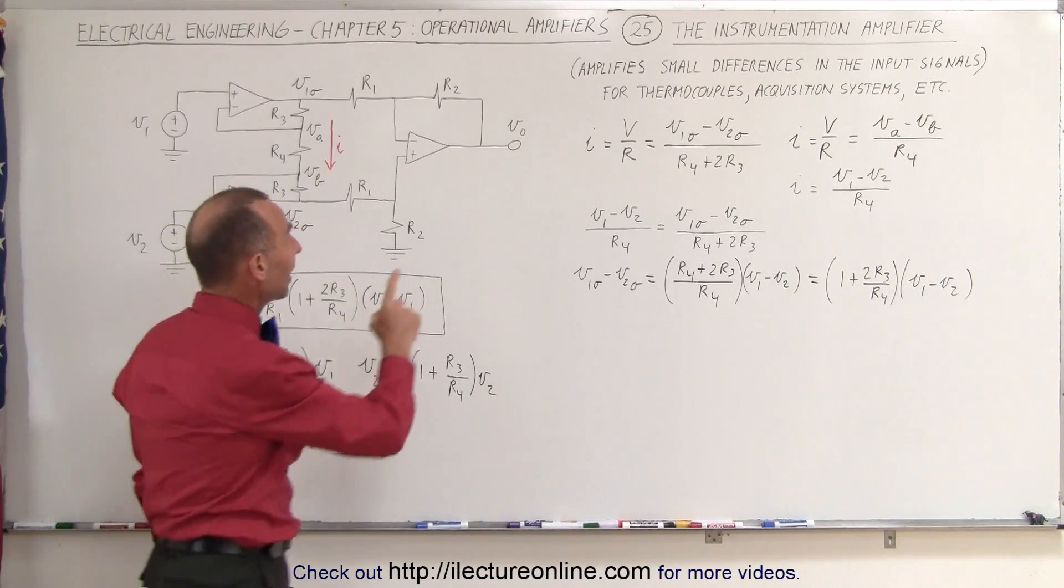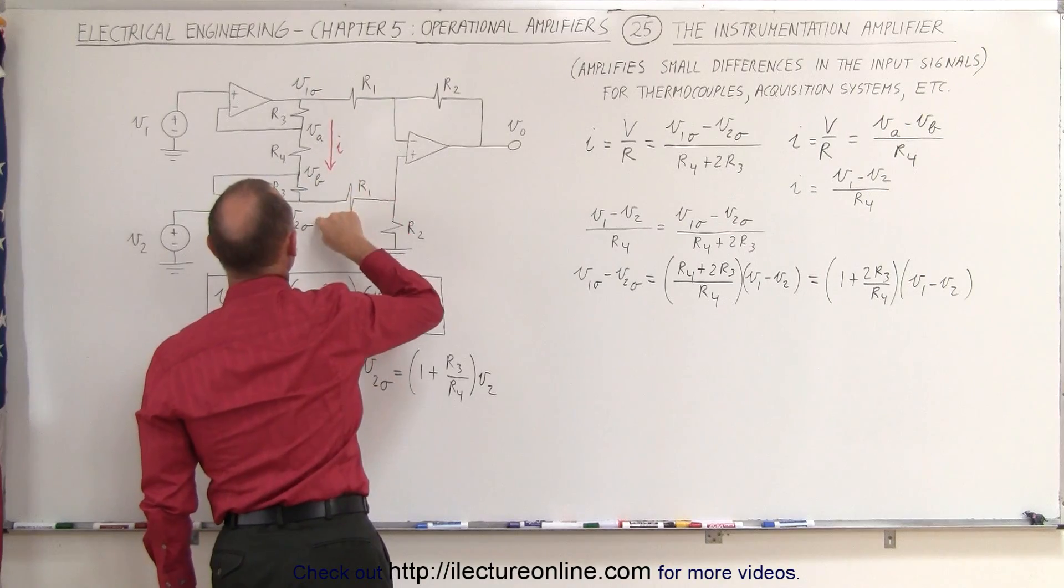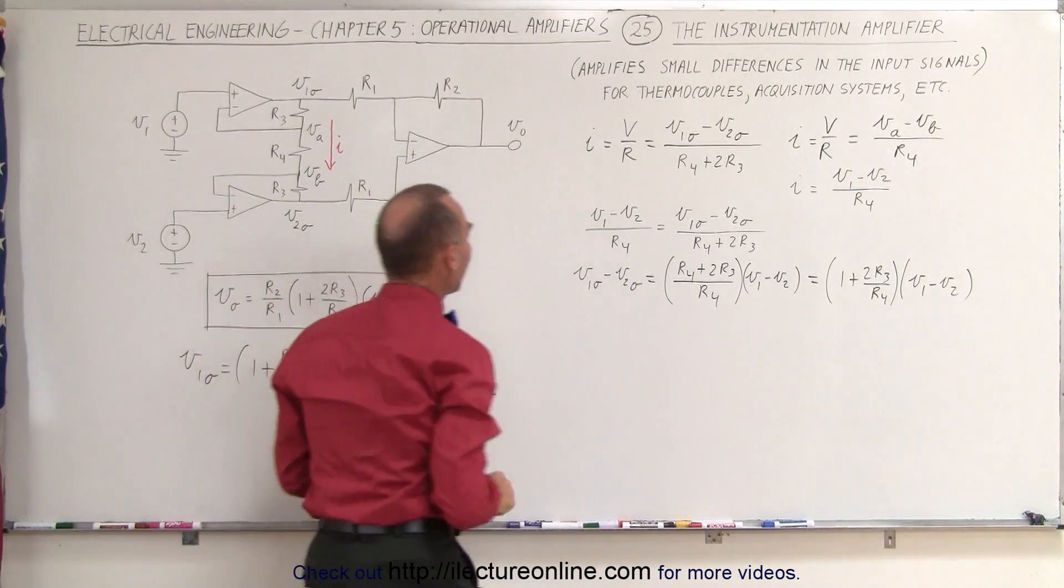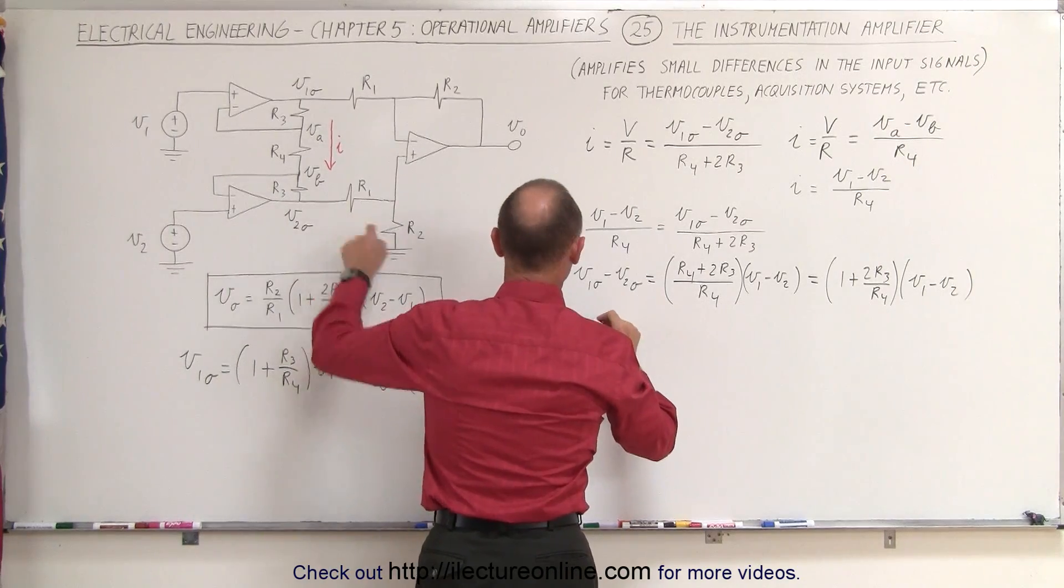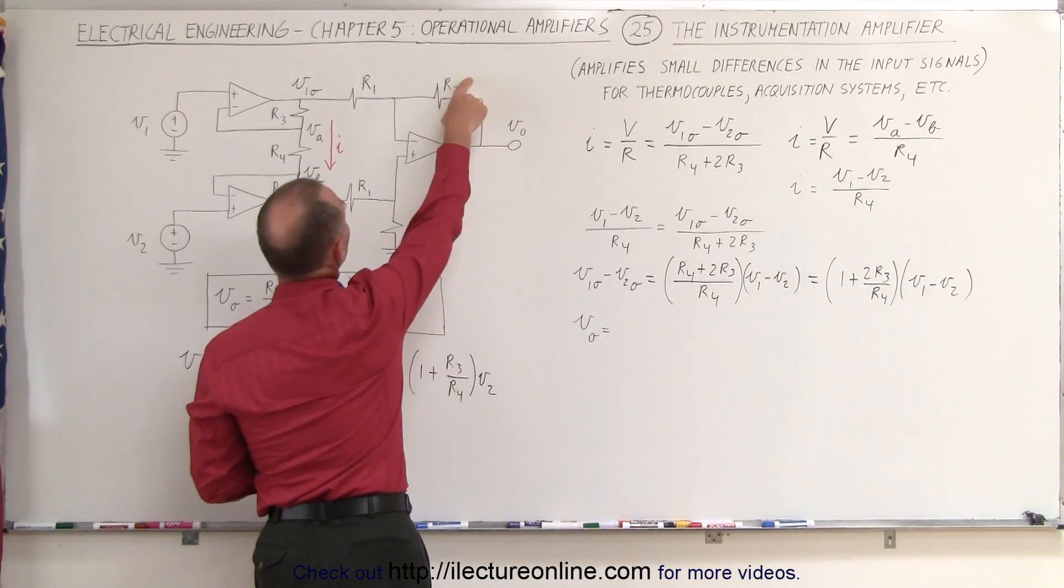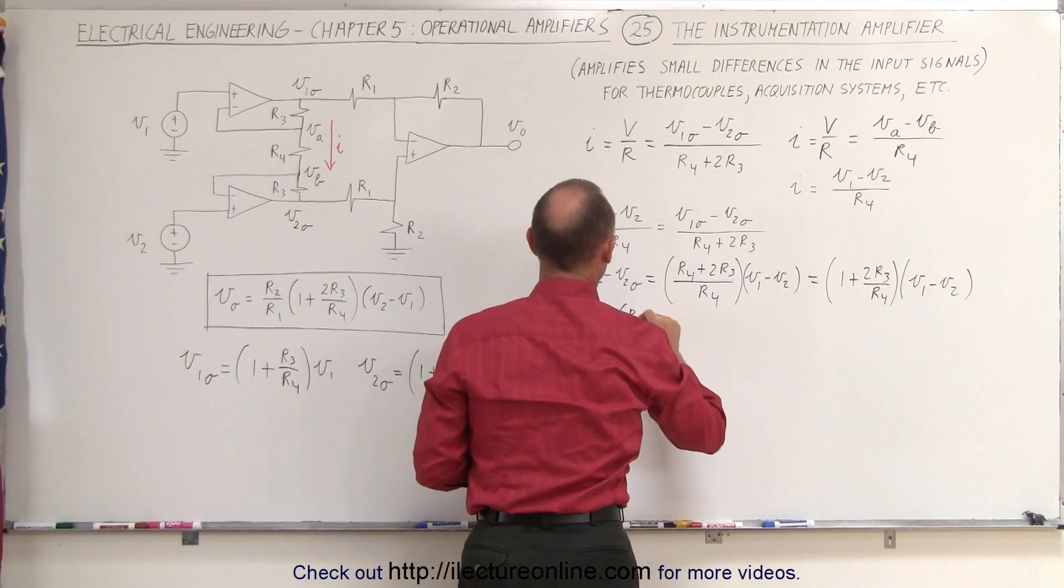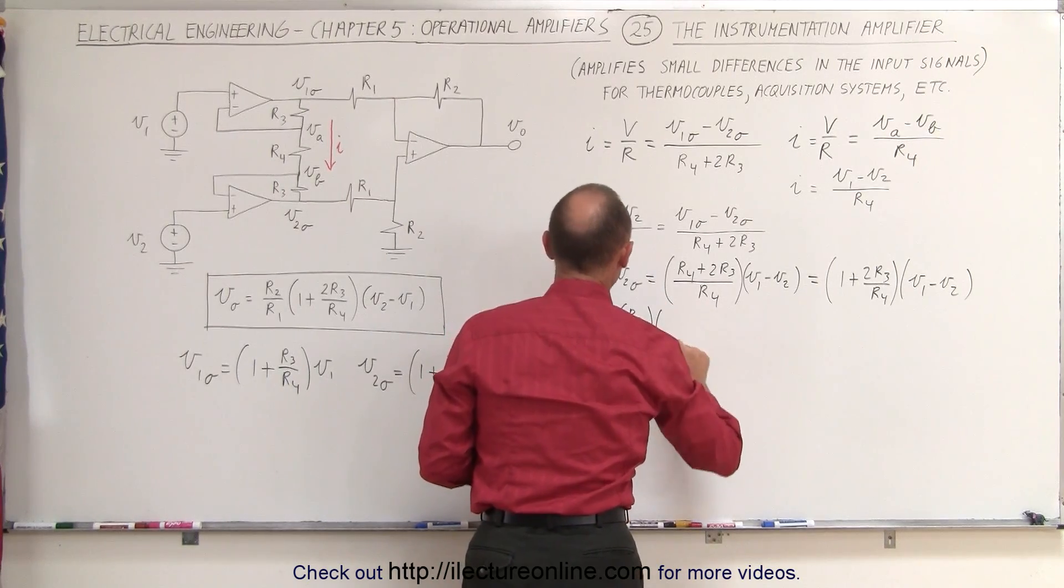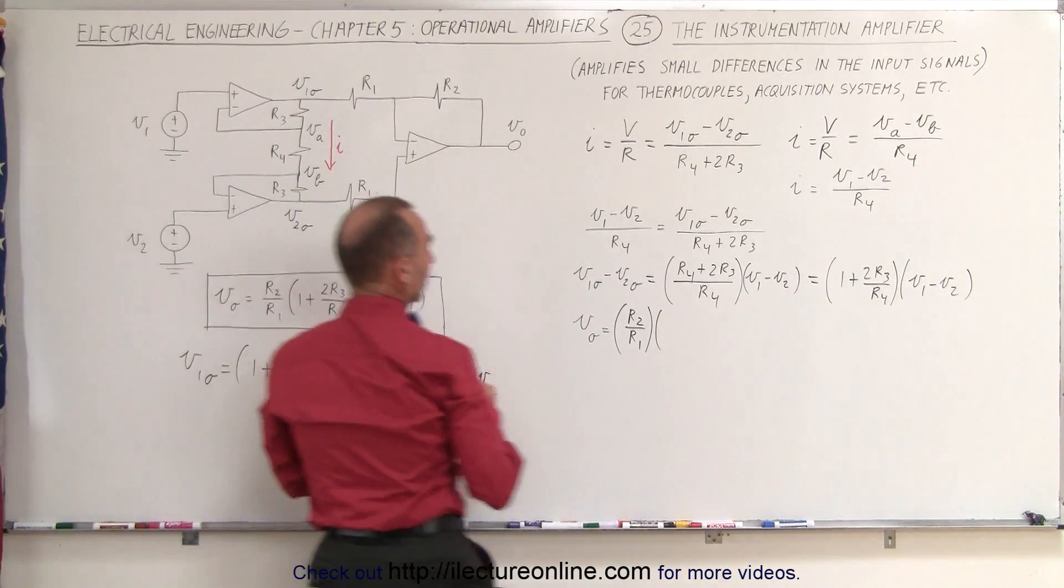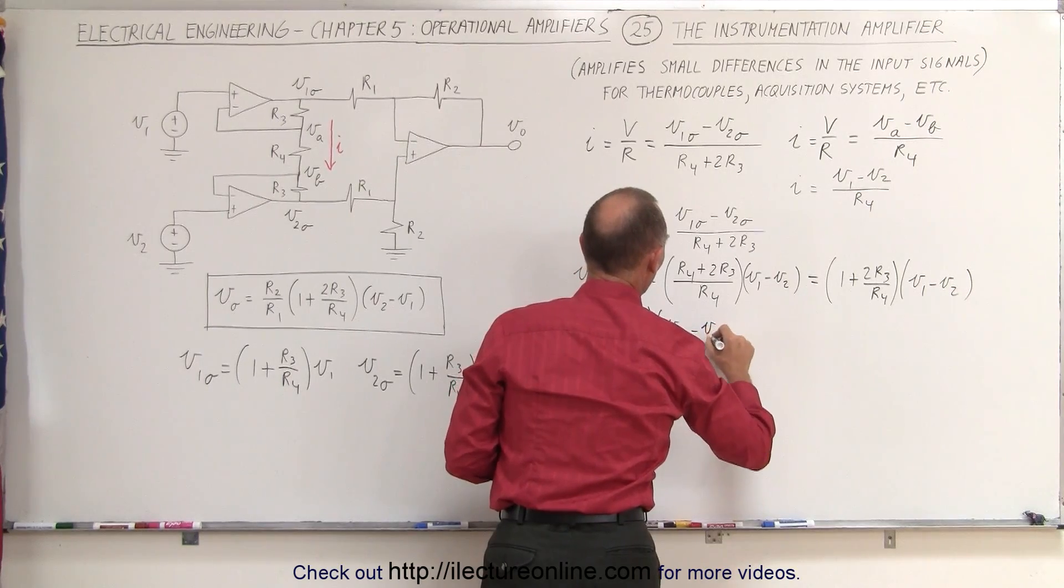Now the next step is to find V output relative to these two V inputs. V1 output and V2 output become the inputs to the third op-amp. So we can say that V output is equal to the ratio of the feedback resistor to the input resistor. That would be the ratio of R2 divided by R1 times the difference between the two inputs, V2 output minus V1 output.